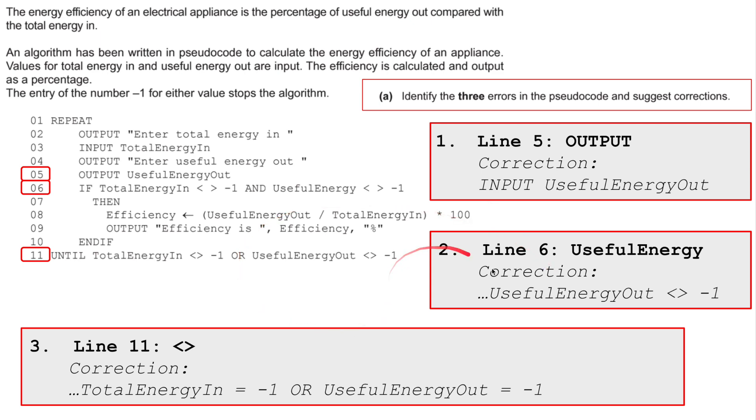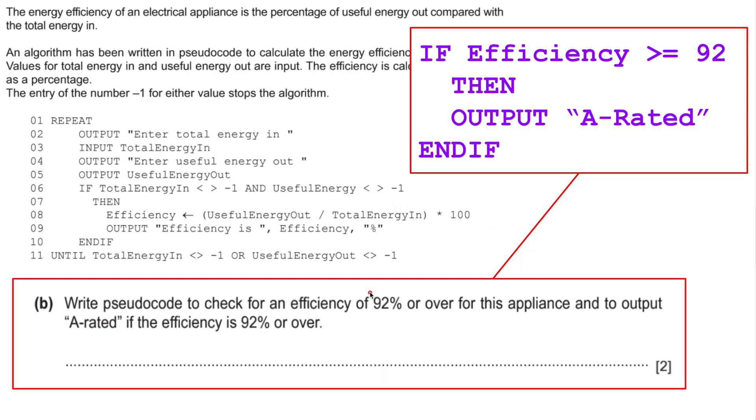We're just doing that. And then, it's asking to write pseudocode to check for an efficiency of 92% or over for an appliance, for this appliance, and to output A-rated if the efficiency is 92% or over. Well, at some point then, I'm going to put, if total energy, then efficiency, times 100. If we do another one here, after this, so after this if statement, so new line 11. If its efficiency is greater than or equal to 92, then I'll put A-rated if, end if. I would stick in after line 10.